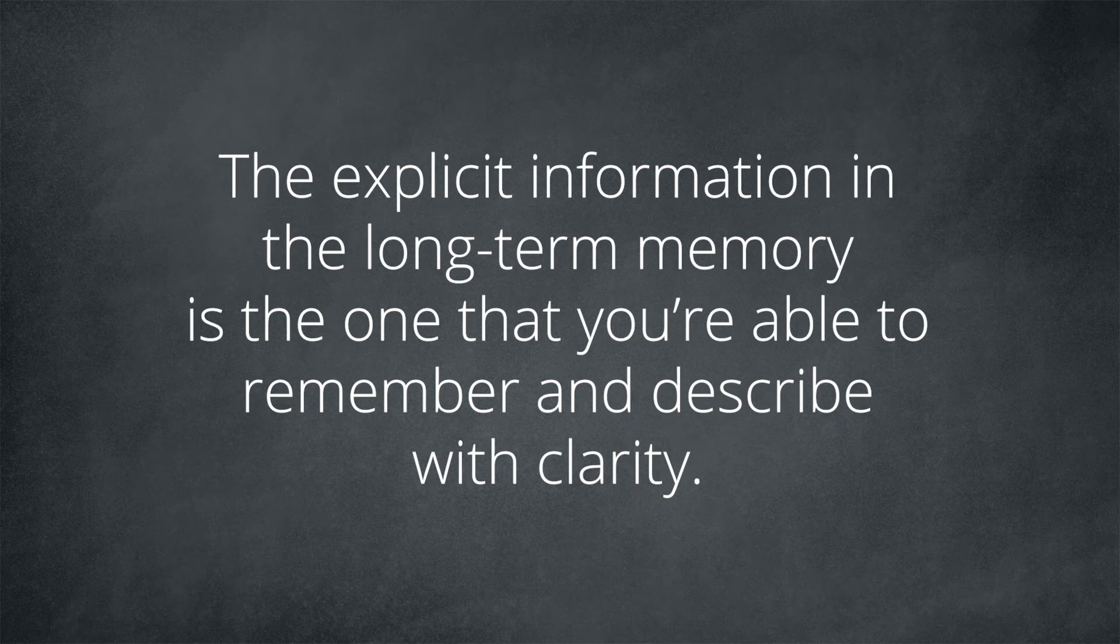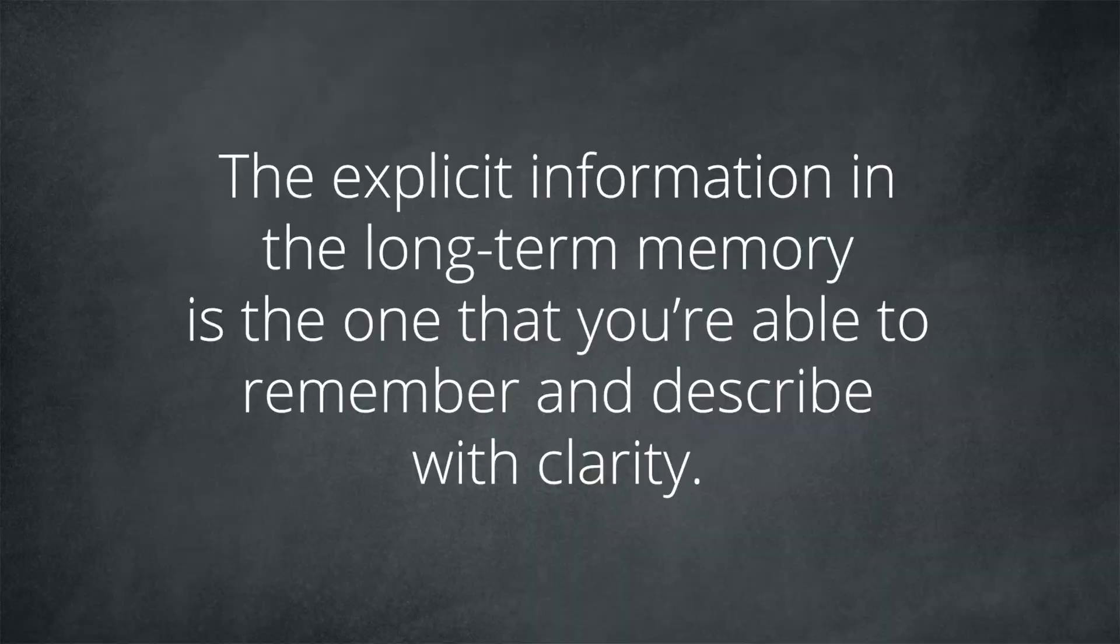And unfortunately, long-term memory is not as infallible as we would like. Sometimes we forget something that we think is important, but for some reason our brain didn't consider it to be important enough, so it discarded the memory. Nevertheless, we are still able to remember a great amount of information in our long-term memory. The details stored in our long-term memory are split into two categories: explicit information and implicit information. The explicit information in a long-term memory is the one that you are able to remember and describe with clarity. That is why they are also called declarative information. For example, a birthday party that you had when you were little. That event might have been so remarkable that after so many years, you are still able to describe clearly that party, even today. Long-term memory, in the explicit category, is divided into two subcategories: semantic and episodic memory.